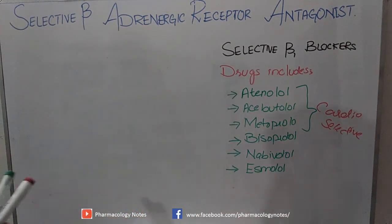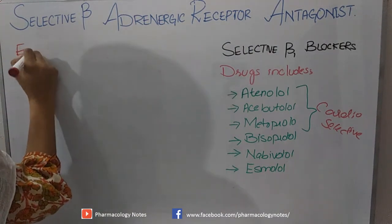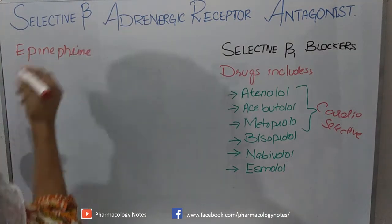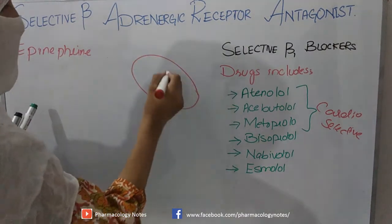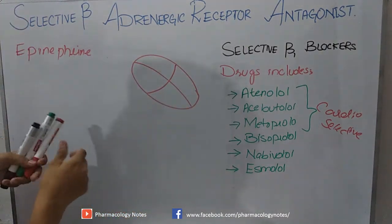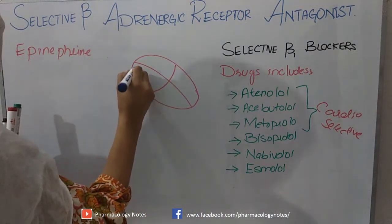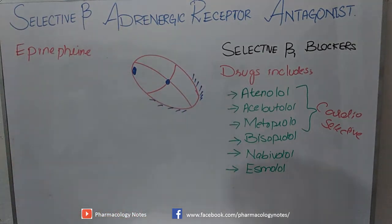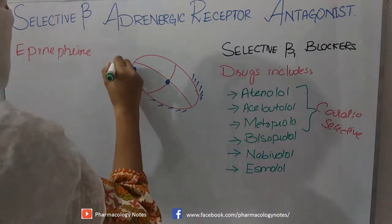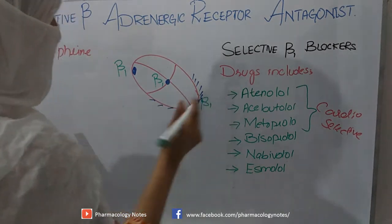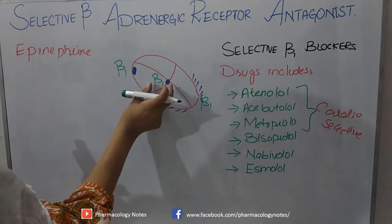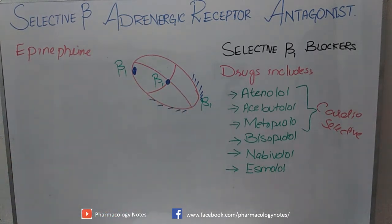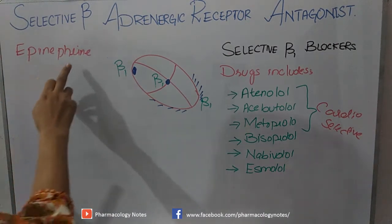Now, how do these drugs act? We have catecholamines or neurotransmitters — epinephrine and norepinephrine. On the heart there are the SA node, AV node, purkinje fibers, and myocardium, and the receptor present on all of these structures is beta-1.